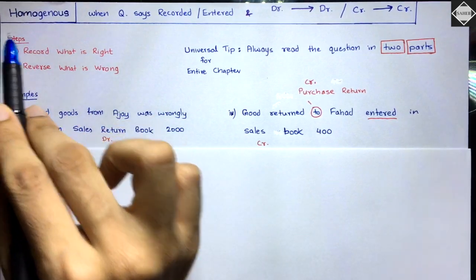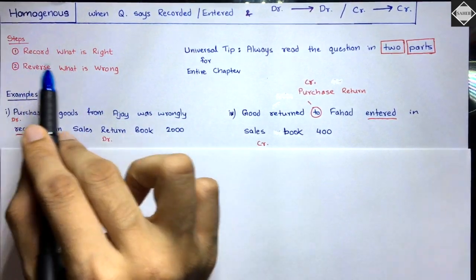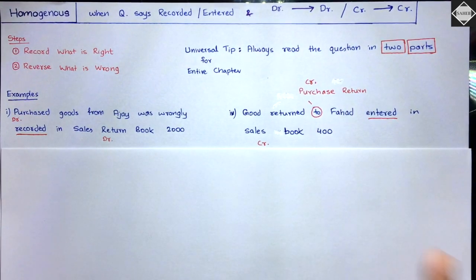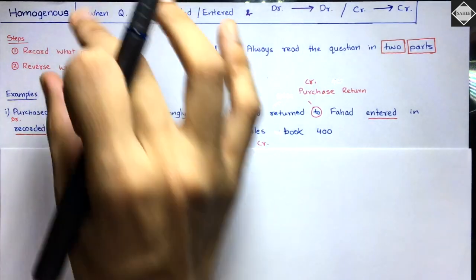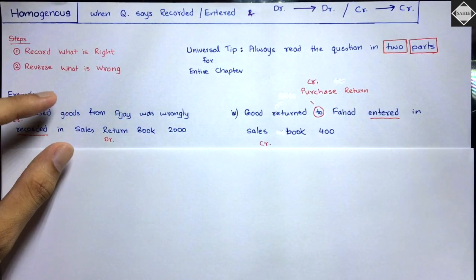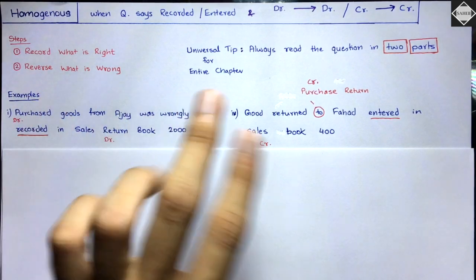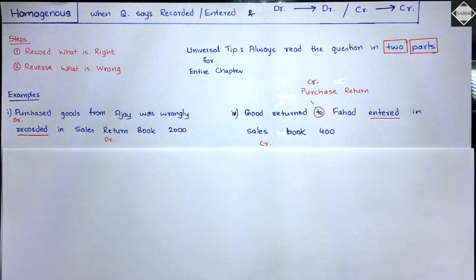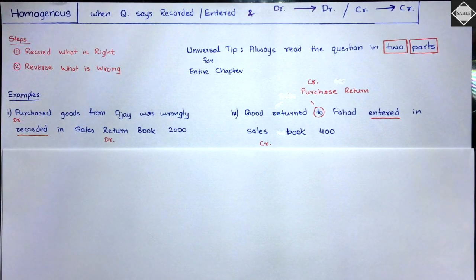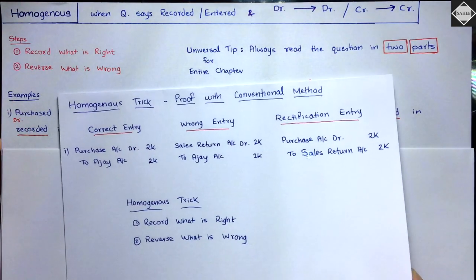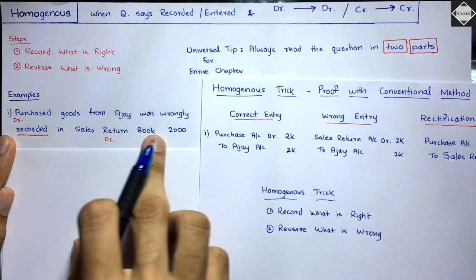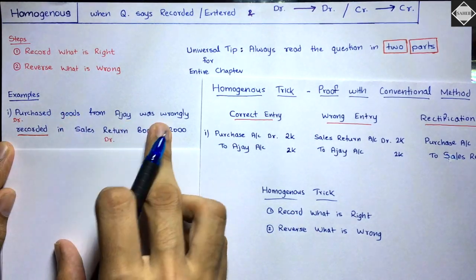The two steps to rectify homogeneous errors are: Step 1 — Record what is right. Step 2 — Reverse what is wrong. That gives you the rectification entry. Let's start with the first transaction using the conventional method as proof, so you can verify that the trick works. The transaction: 'Purchase goods from Ajay was wrongly recorded in sales return book, ₹2000.' Keyword: recorded — first category. Purchase (debit) and sales return (debit) — debit into debit — homogeneous.